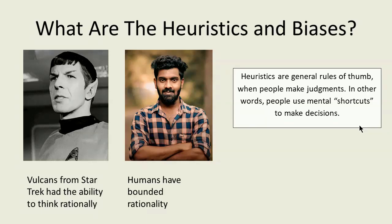People use heuristics, or general rules, to make judgments — in other words, people make mental shortcuts to make decisions. In many cases, the simplified model provides a correct answer, and because of this, as a species, we have achieved tremendous success. Unfortunately, because of the way it simplifies situations, in complex situations the model can often be incorrect. This leads to mental mistakes or biases. Availability was one such bias. Here are a few other biases common in project management.